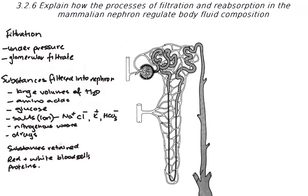The next part we're going to look at is reabsorption. Once the filtrate has entered the first part of the nephron — the proximal convoluted tubule — we start to see reabsorption of the necessary materials occurring. These are filtered selectively at various points along the nephron. At the beginning we see active reabsorption.